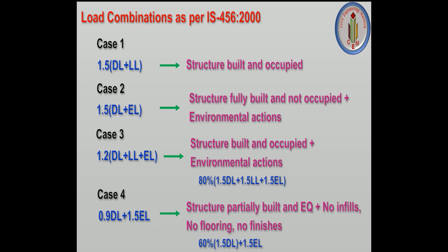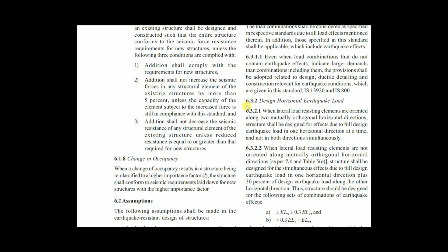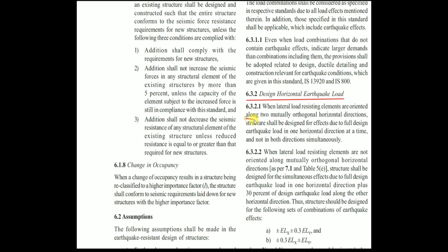IS 1893:2016 also has clause 6.3.2 for design horizontal earthquake load. When lateral load resisting elements are oriented along two mutually orthogonal horizontal directions, the structure shall be designed for the full design earthquake load in one horizontal direction at a time — not in both directions simultaneously. This means either the X direction or Y direction, not both together.